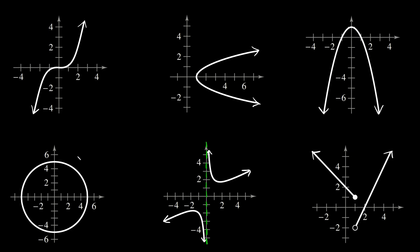Now what about this graph down here? We have a circle. If we draw a vertical line through a circle, you'll see it's going to intersect it at exactly two points. So that means this one is not a function.